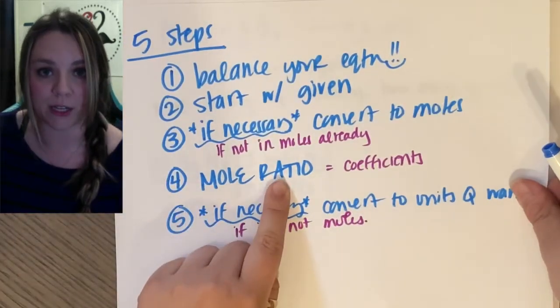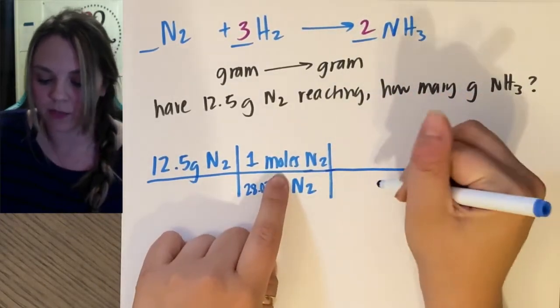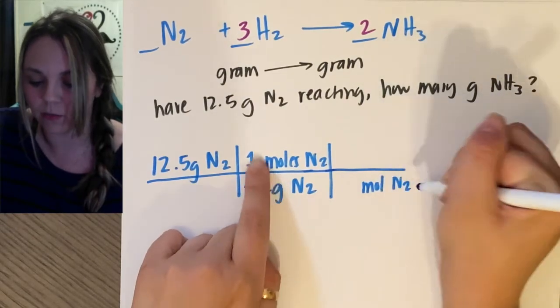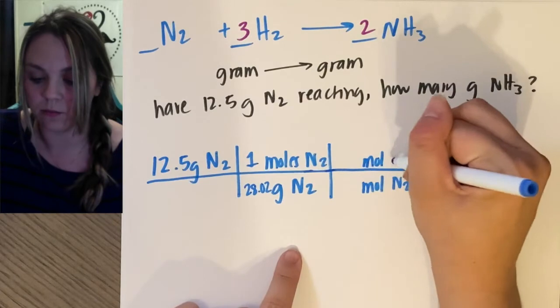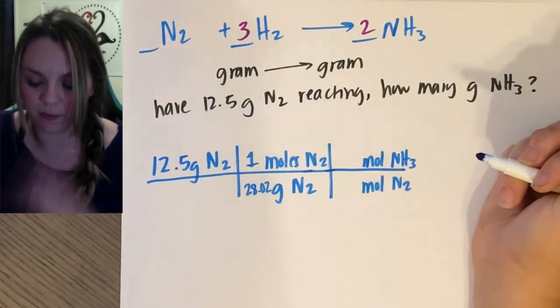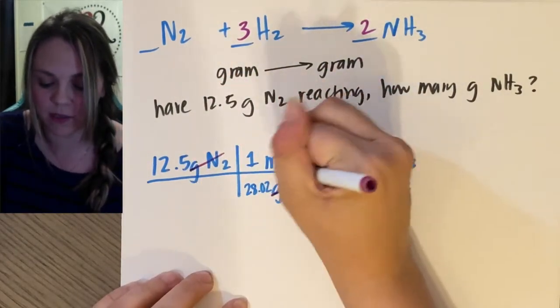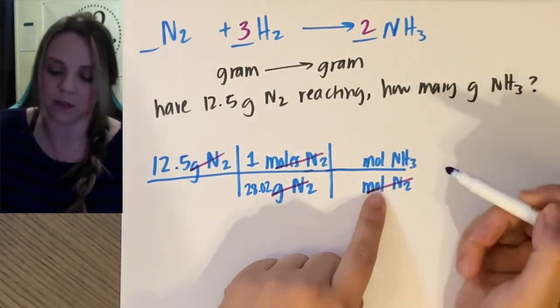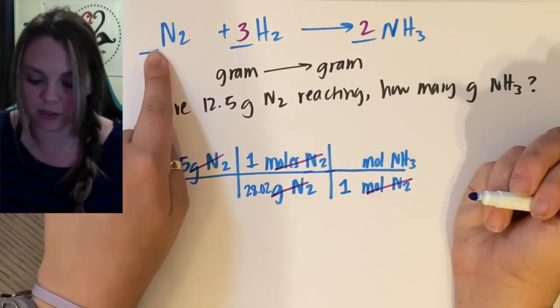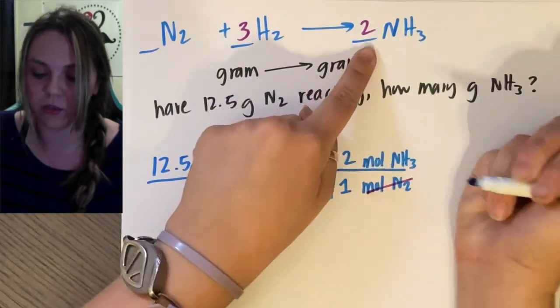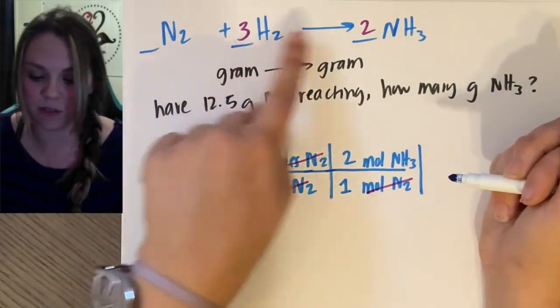Now I use my mole ratio, which is my coefficients. I'm in moles of nitrogen, I don't want to be in moles of nitrogen. Get rid of moles of nitrogen, find moles of ammonia. So put that on the numerator. I should cancel as we go, grams and grams cancel, now moles of N2 are going to cancel. And I use my balance coefficients, so one mole of N2 for every two moles of NH3. Just use these numbers.